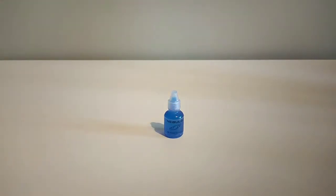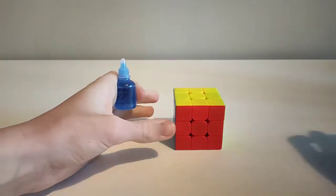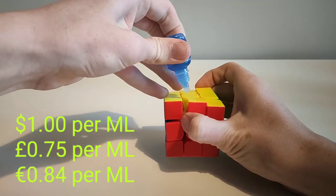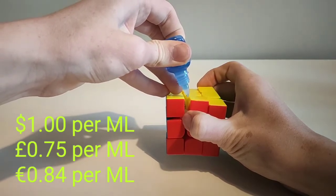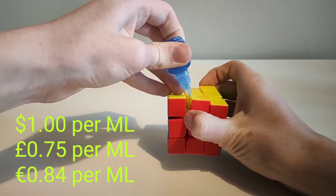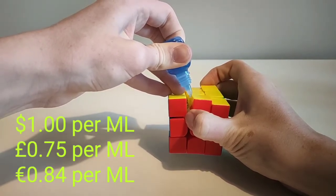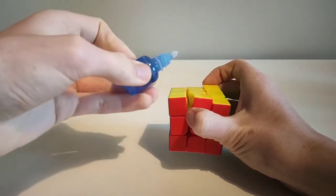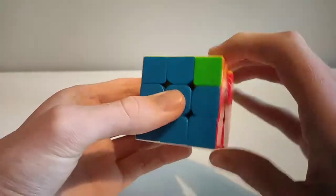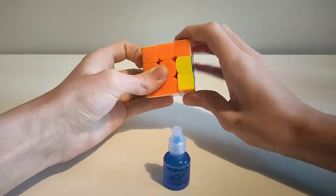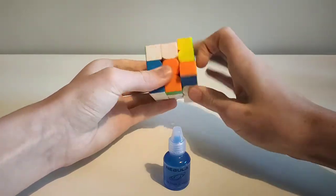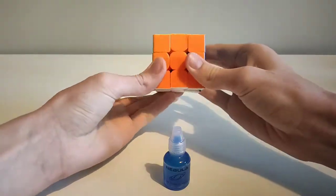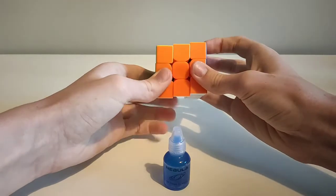Next up we have speedcube shop nebula. Speedcube shop nebula is the smoothest out of the speedcubeshop cosmic lubes. It can make the cube slower if you put a lot in, and the main effect is that it makes the cube very smooth and quiet.